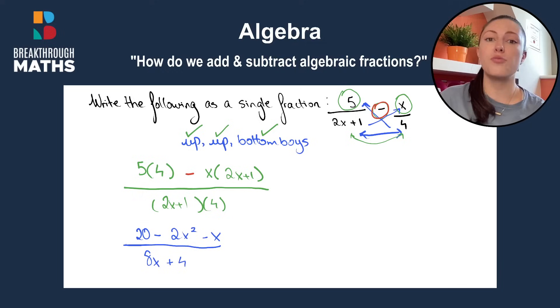And all we can do here is just reorder our answer to make it look a bit neater. So we're used to seeing our x squared first. We'll put minus 2x squared first, then our x minus x, then our number plus 20. All over 8x plus four.